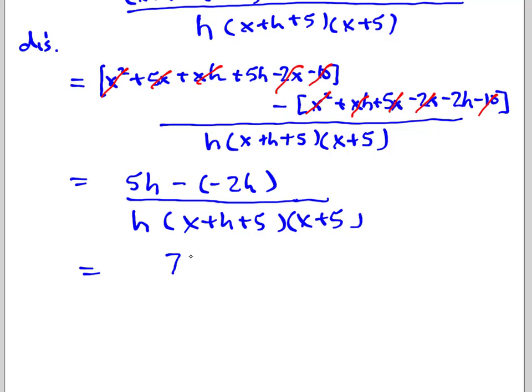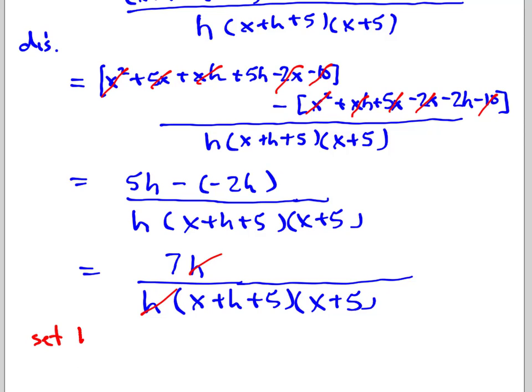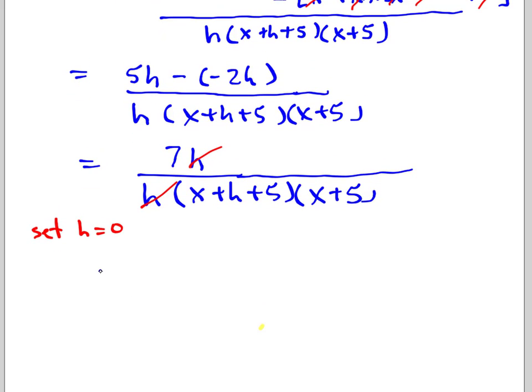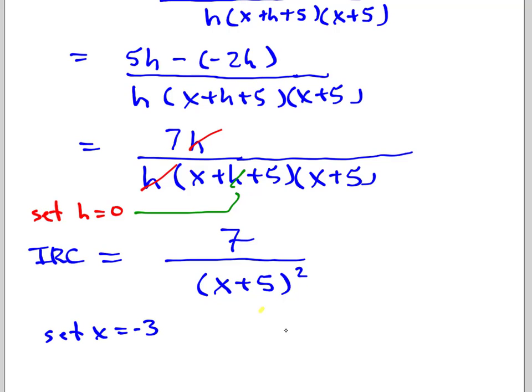And then you notice on the top, that simplifies to be 7h. And just like we had with our polynomial expressions, the h's will cancel and get rid of the h in the denominator, which is what I want, because that's the one that causes the problem. So these guys disappear. And then if I set h equal to zero, that simplifies the bottom even further. And I'm going to get this really lovely expression. So if we set h to zero, this guy goes to zero, and then we're left with 7 over x plus 5 squared. So that is your general equation for an IRC for this rational function.